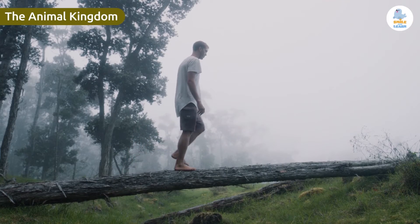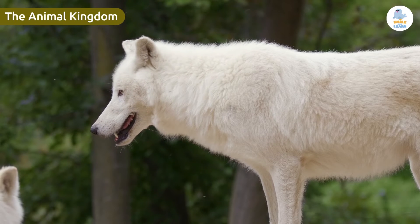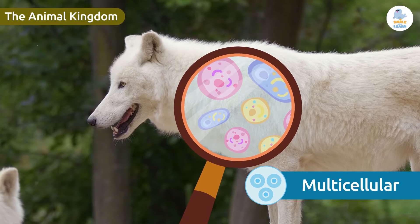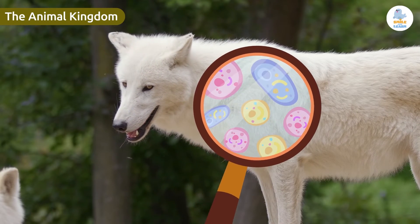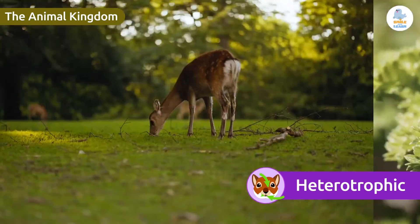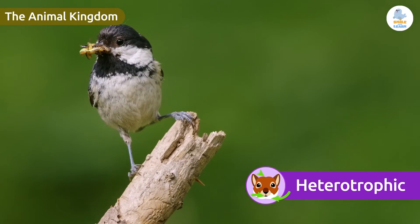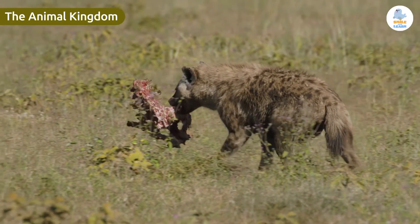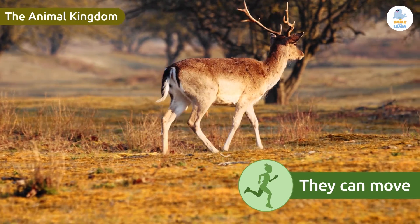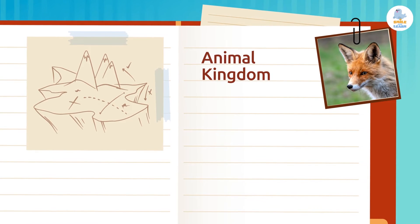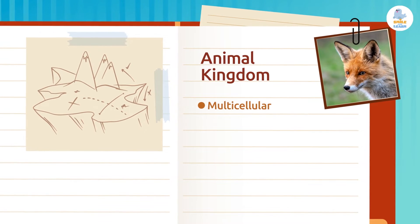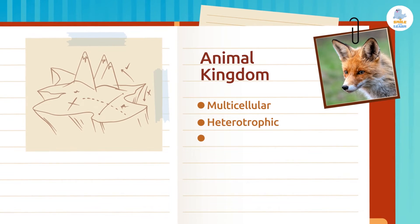Let's take a look at some characteristics of the animal kingdom. Animals are multicellular, meaning they're made up of more than one cell. All animals are heterotrophic, which means they eat other organisms to get the substances they need to survive. Another important characteristic is that almost all of them can move on their own. So the characteristics of the animal kingdom are: multicellular, heterotrophic, and most of them can move on their own.